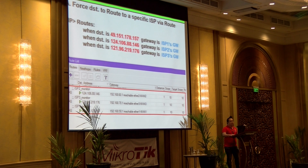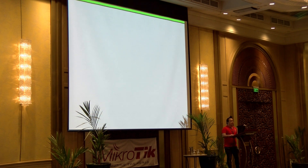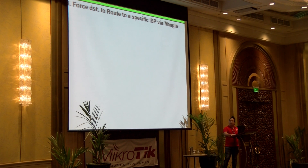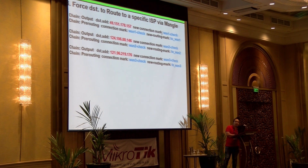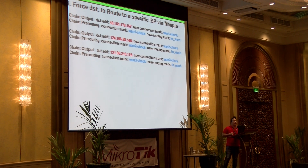Aside from that, I will also use Mangle. The rule for Mangle: when it says it's going out of the router and the destination is 49.151, it will create a new connection mark. Then at pre-routing, when you see that connection mark, it will have a routing mark assigned. So relatively, each public IP will have a routing mark.